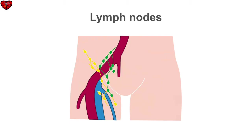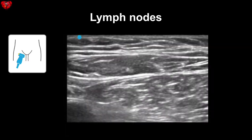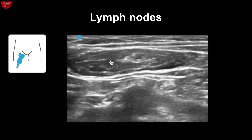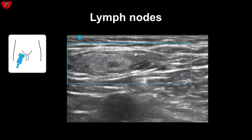Lymph nodes are another structure you will encounter when ultrasounding the groin. Lymph nodes are heterogeneous structures that are rounded and blind-ending. Here you can see a lymph node.